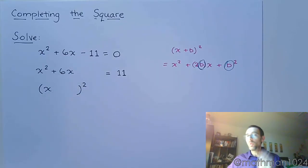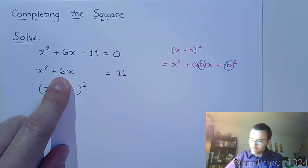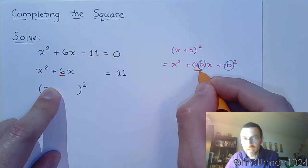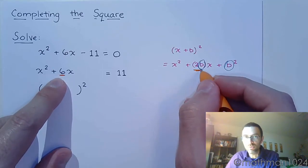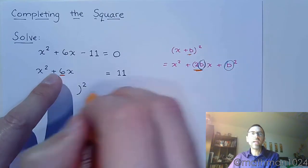We don't have to guess. See this guy right here, this 6 is your 2b. So if 6 is 2b, that means that b, this guy right here, is going to be half of that guy.